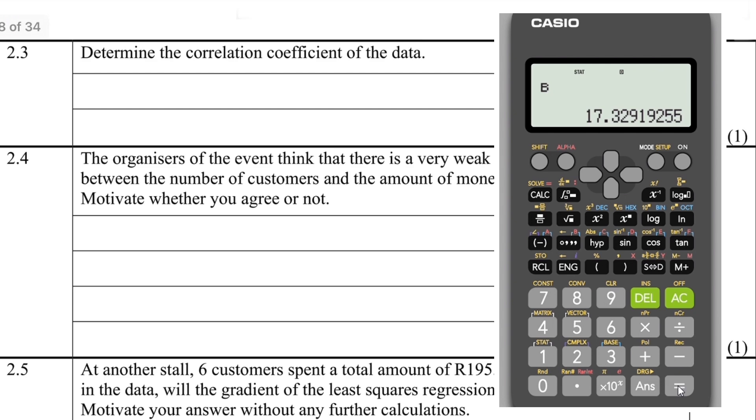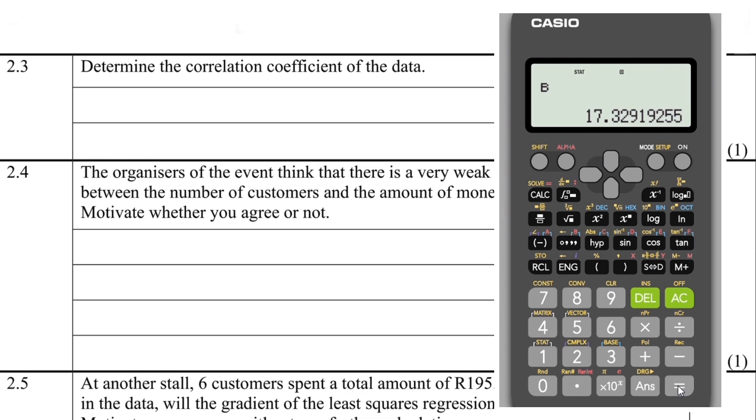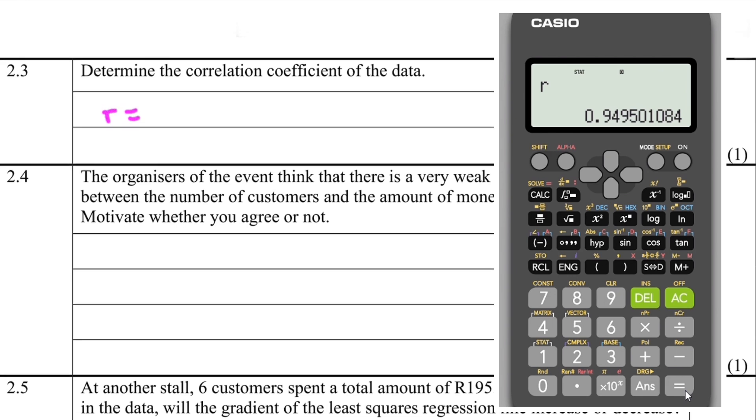Moving forward, 2.3: determine the correlation coefficient of the data. We have to go back to our calculator. We press AC, shift 1, 5 for regression. And then the correlation coefficient is given by a small letter r. So in my calculator I'm pressing option 3. Maybe in your calculator it's a different option, but it doesn't really matter. I press 3 and then I press equals. 0.95 rounded off to two decimal places. So the correlation is 0.95, a very strong correlation.